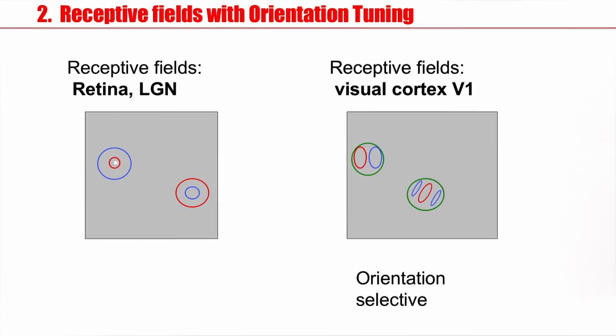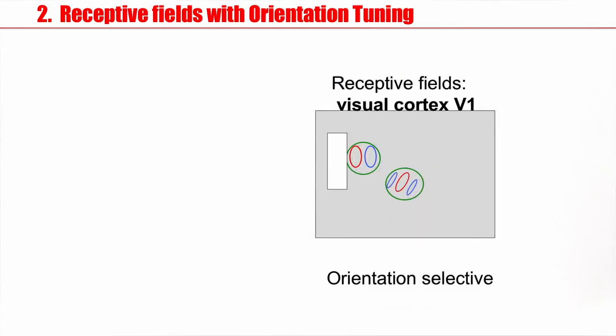So in visual cortex, we can say that the zones have a substructure which leads to orientation selectivity. Let me explain this. If you now use a light bar and not a light dot, then you can move this light bar across the screen and it will touch different regions of the receptive field.